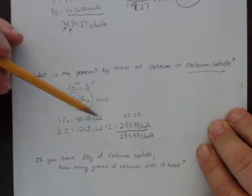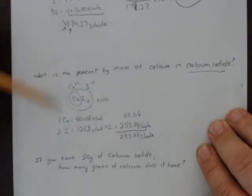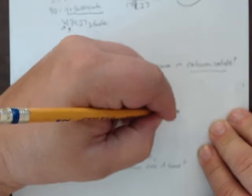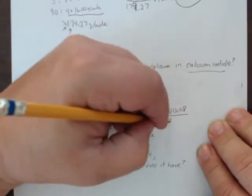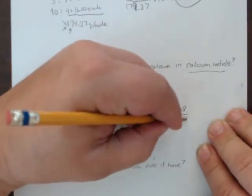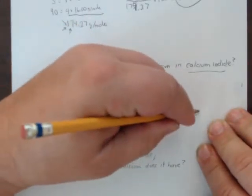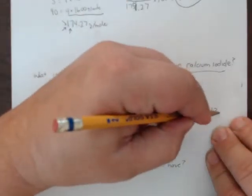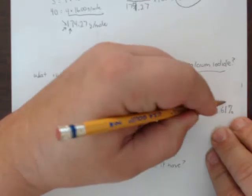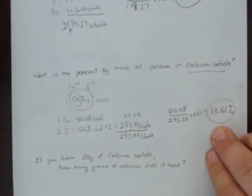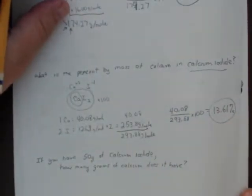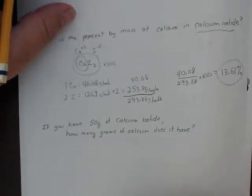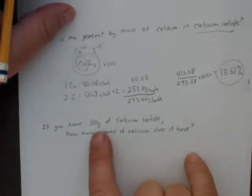Now it's the mass of calcium over the mass of the whole compound — part over total. So 40.08 divided by 293.88, times 100, which comes out to be 13.61%.